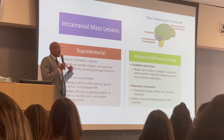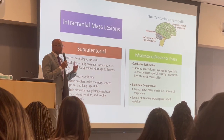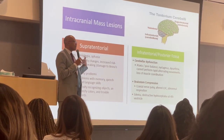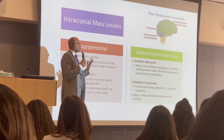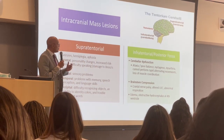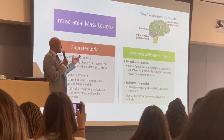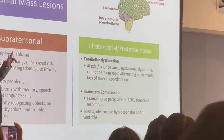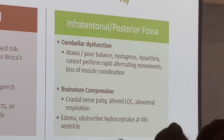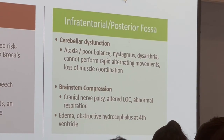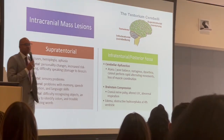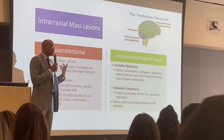So when you go back on Monday, Tuesday, Wednesday — whenever you go back — you'll start seeing a little bit more about how and why we do things and why blood is in certain places. Posterior or infratentorial, the two biggest things are really balance, and they'll also talk about altered level of consciousness, generally because something.